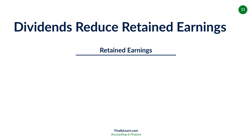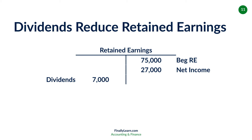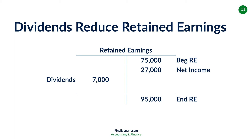Let's show this a different way as a T-account. What if we have $75,000 as our beginning retained earnings? That's a credit. We increase it with net income of $27,000. We decrease it with a debit for dividends of $7,000. Therefore, the balance of retained earnings is $95,000: $75,000 plus $27,000 minus $7,000 equals $95,000. That's another way to visualize retained earnings.